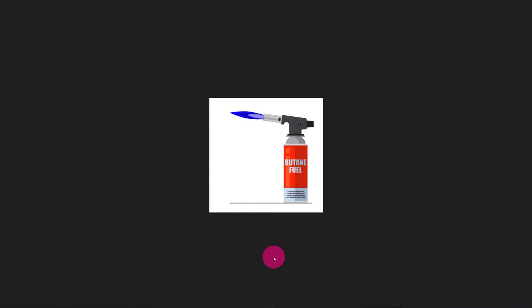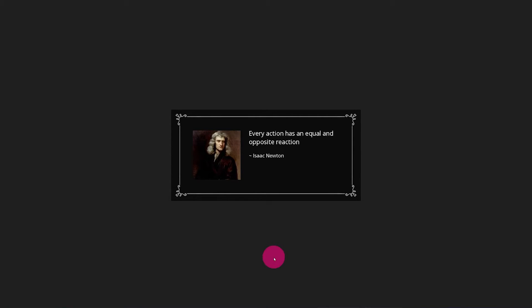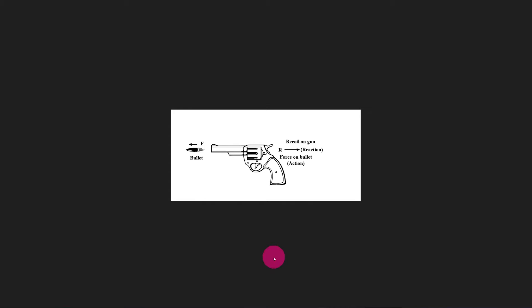It's just a blowtorch - fuel and air mixture set on fire, blowing out the back. Newton's third law of motion states, every action has an equal and opposite reaction. Like when you shoot a bullet from a gun, it kicks your hand back in the opposite direction of the bullet.